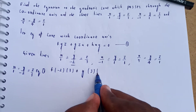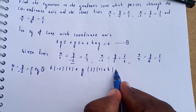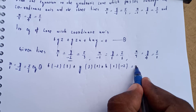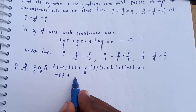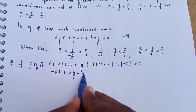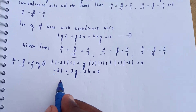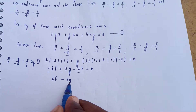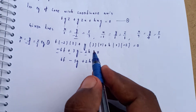Substituting the direction ratios of the first line (1, -2, 3) into equation number 1: f·yz + g·zx + h·xy = 0 gives f·(−2)(3) + g·(3)(1) + h·(1)(−2) = 0, which simplifies to −6f + 3g − 2h = 0. This is equation number 2.